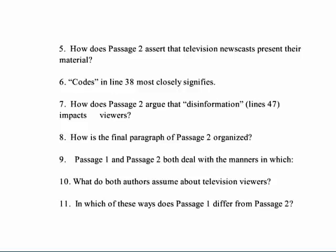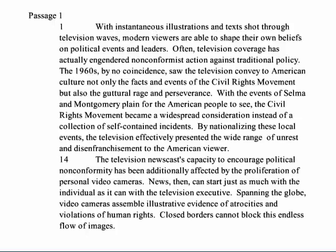Let's read the passage. With instantaneous illustrations and texts shot through television waves, modern viewers are able to shape their own beliefs on political events and leaders. Often television coverage has actually engendered non-conformist action against traditional policy. The 1960s, by no coincidence, saw the television convey to American culture not only the facts and events of the Civil Rights Movement, but also the guttural rage and perseverance. With the events of Selma and Montgomery playing for the American people to see, the Civil Rights Movement became a widespread consideration instead of a collection of self-contained incidents. By nationalizing these local events, the television effectively presented the wide range of unrest and disenfranchisement to the American viewer. The television newscast's capacity to encourage political non-conformity has been additionally affected by the proliferation of personal video cameras. News, then, can start just as much with the individual as it can with the television executive. Spanning the globe, video cameras assemble illustrative evidence of atrocities and violations of human rights. Closed borders cannot block this endless flow of images.